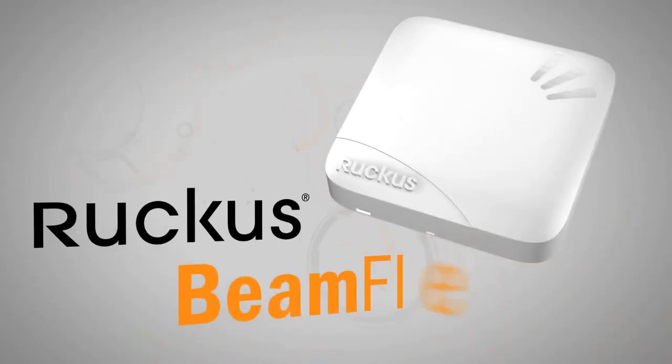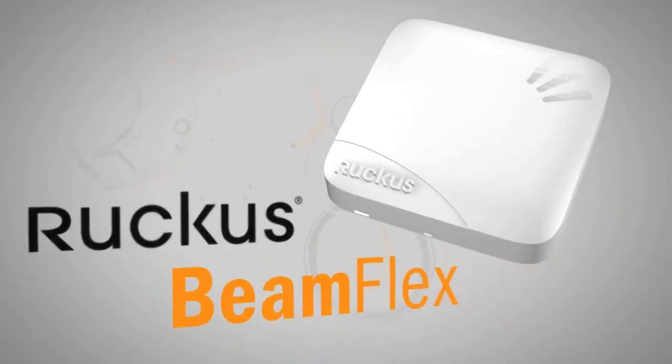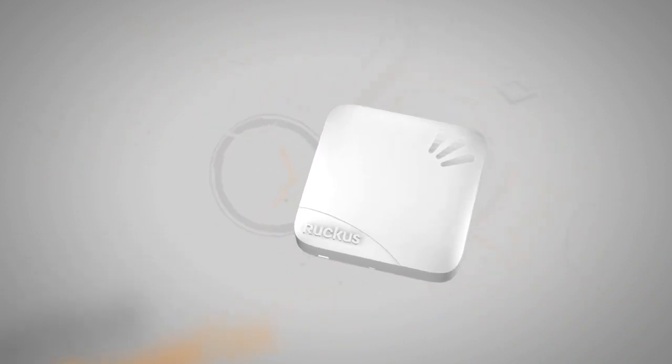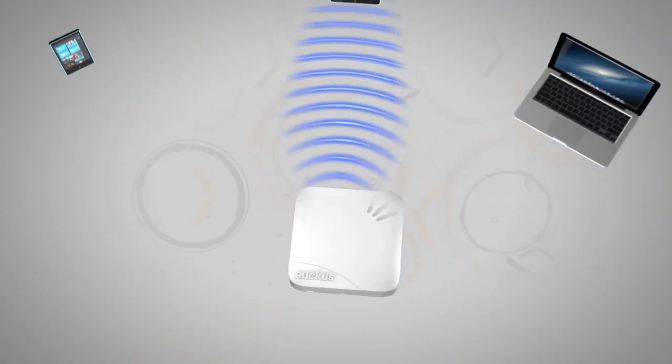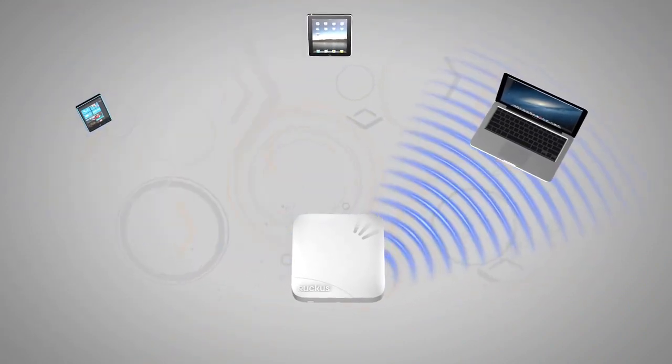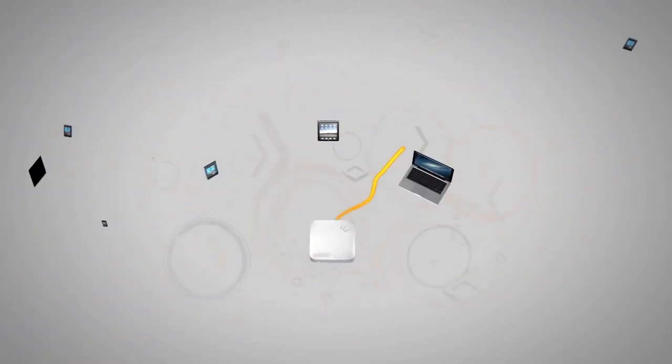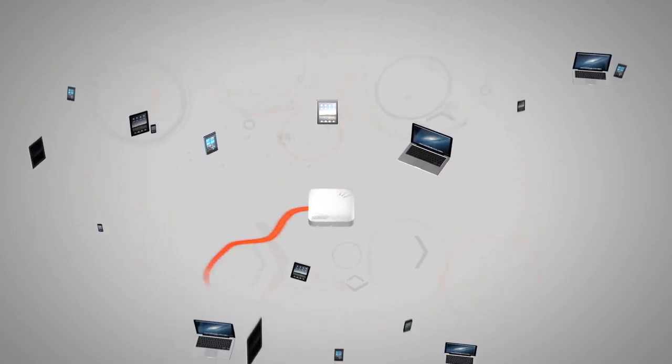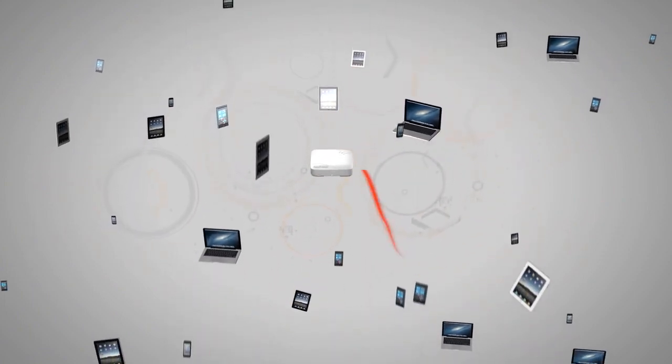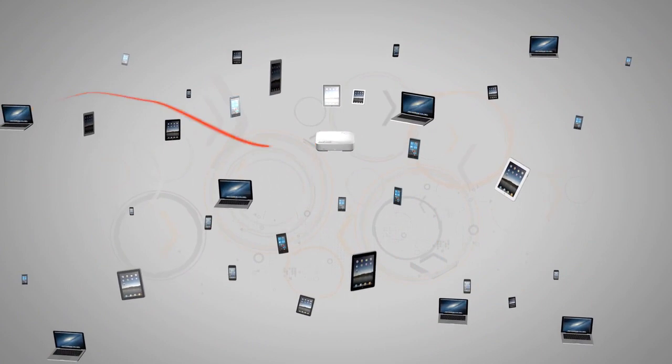Enter Ruckus BeamFlex. BeamFlex is the only adaptive Wi-Fi antenna technology that focuses and controls Wi-Fi signals. By increasing signal and decreasing interference, Wi-Fi performance is improved dramatically. This means more efficient connections and more room for more users, giving them a better Wi-Fi experience.